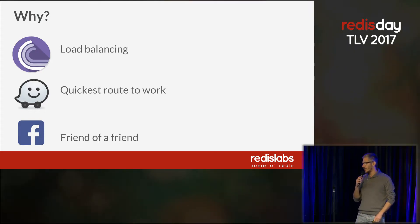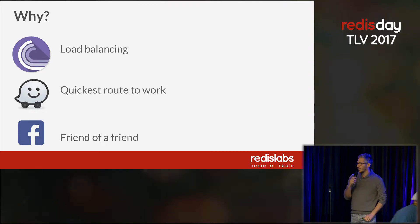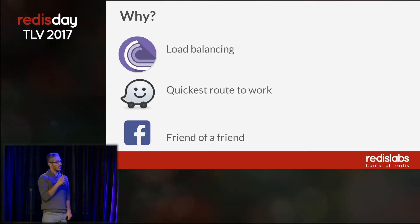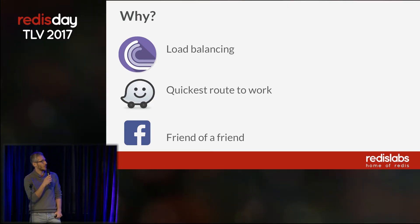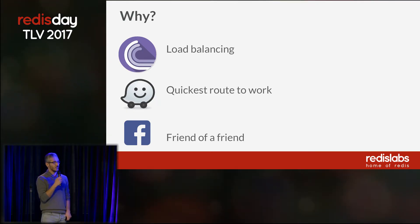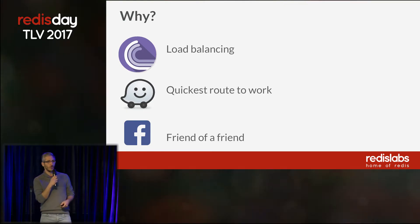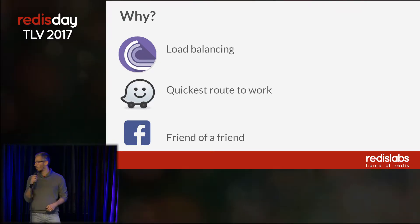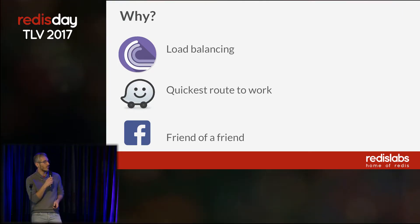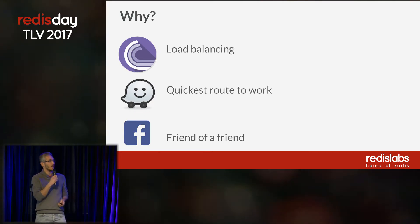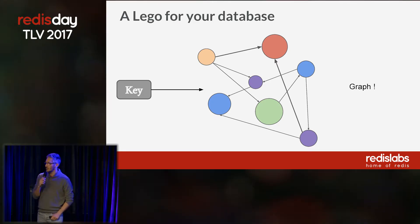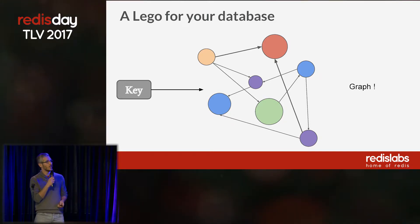One question you might want to ask yourself is why even bother? Well, as it turns out, graphs are pretty interesting. You can do all sorts of really cool things with them. For instance, social media uses graphs to introduce you to people you might know. Waze uses graphs to find the quickest route from home to work. And you can also use graphs to do some network load balancing. Now that we have Redis modules, we can use it to introduce a new data structure: the graph.